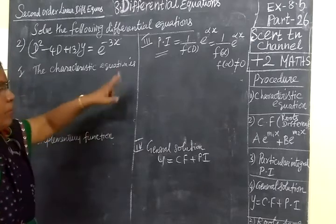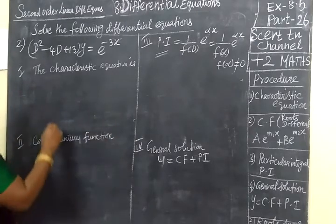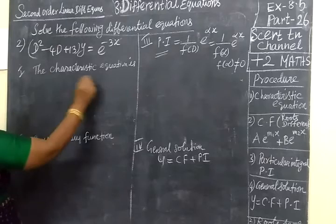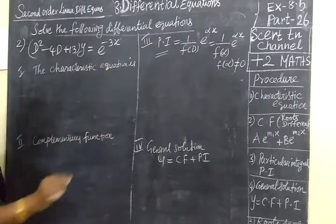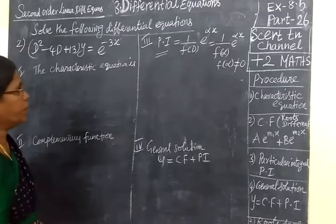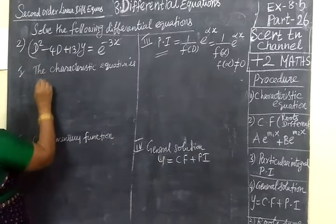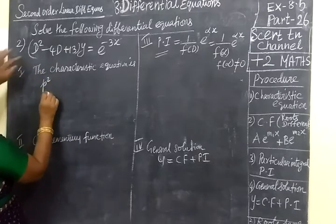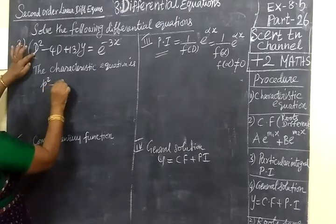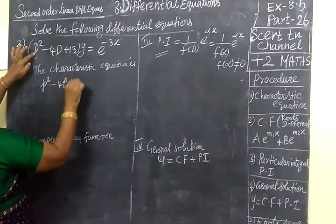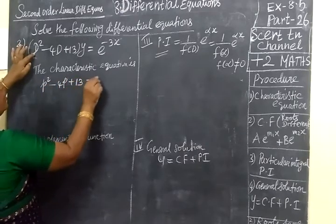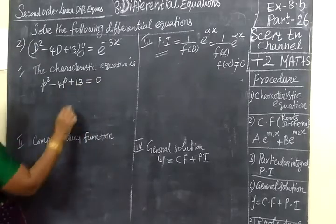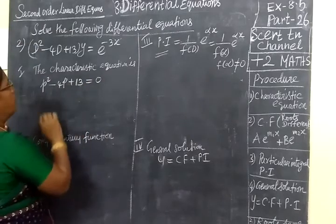For the time saving, I have written all the 4 steps. The first is finding the characteristic equation. Instead of d squared, we are writing p squared minus 4p plus 13 equal to 0. Multiply, minus 13 plus 4 is minus 4.